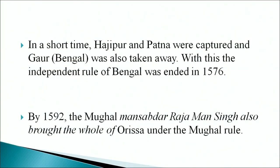Akbar's campaign against the Afghans started with Gujarat in 1572, where one of the princes had invited Akbar to come and conquer it. Bengal and Bihar, under the control of the Afghans, received attention after the Gujarat expedition. In 1574 Akbar, along with Munim Khan Khan, marched towards Bihar. In a short time Hajipur and Patna were captured, and Gaur in Bengal was also taken. With this, the independent rule of Bengal ended in 1576. By 1592 the Mughal mansabdar Raja Man Singh had brought the whole of Orissa under Mughal rule.